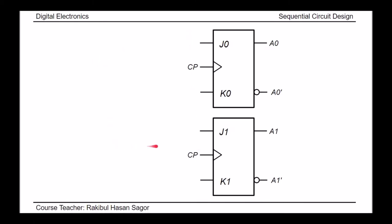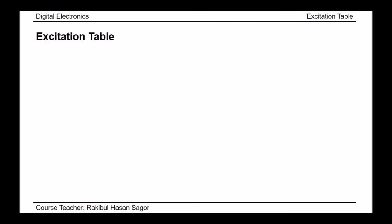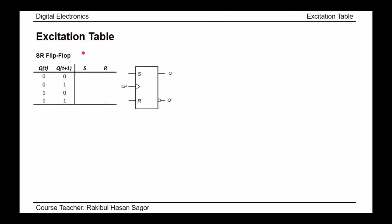Now we need to design the combinational logic block. Before we start, we need to understand the excitation table. The excitation table lists the required inputs for a given change of state. For example, if we consider an SR flip-flop and we know the present state and want a specific next state, the excitation table tells us what inputs are required to achieve that state change.